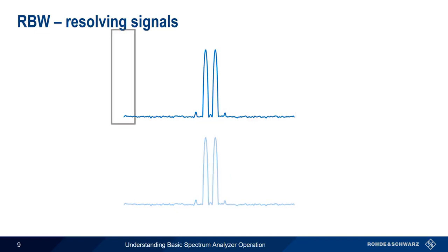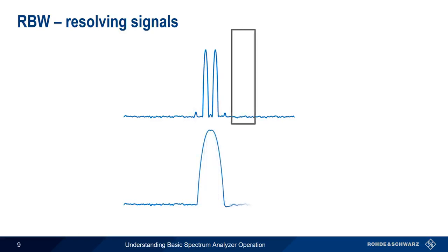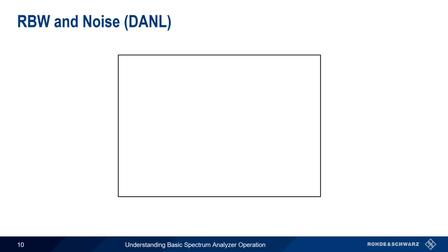If we were to use a wider resolution bandwidth, both tones are covered by the filter as it sweeps past, and they appear as a single signal in our trace. The other important aspect of resolution bandwidth is the effect that it has on noise. More specifically, resolution bandwidth affects the noise floor, also referred to as the Displayed Average Noise Level, or DANL.